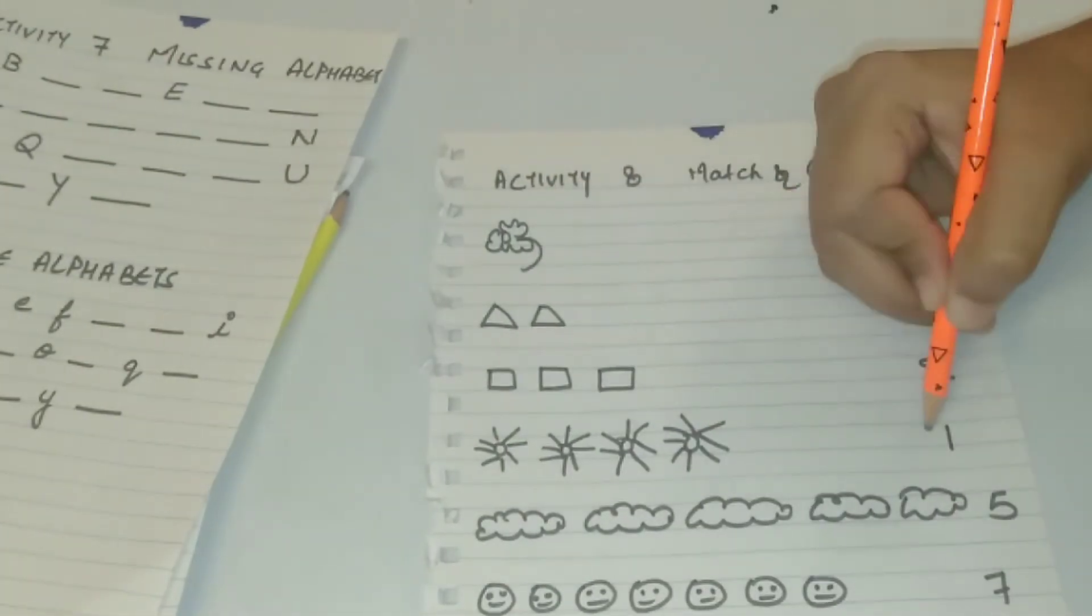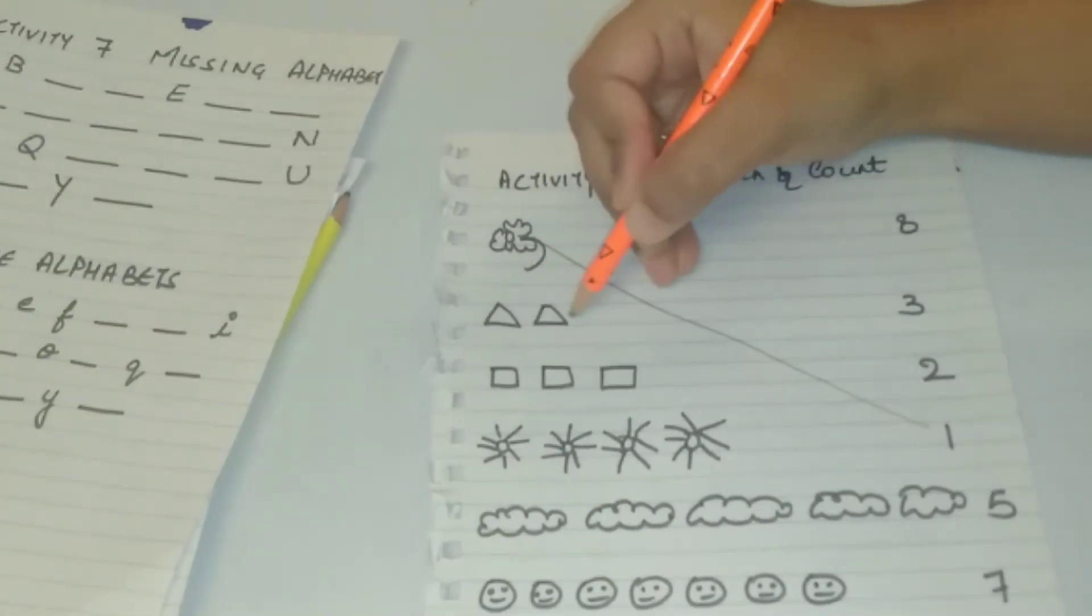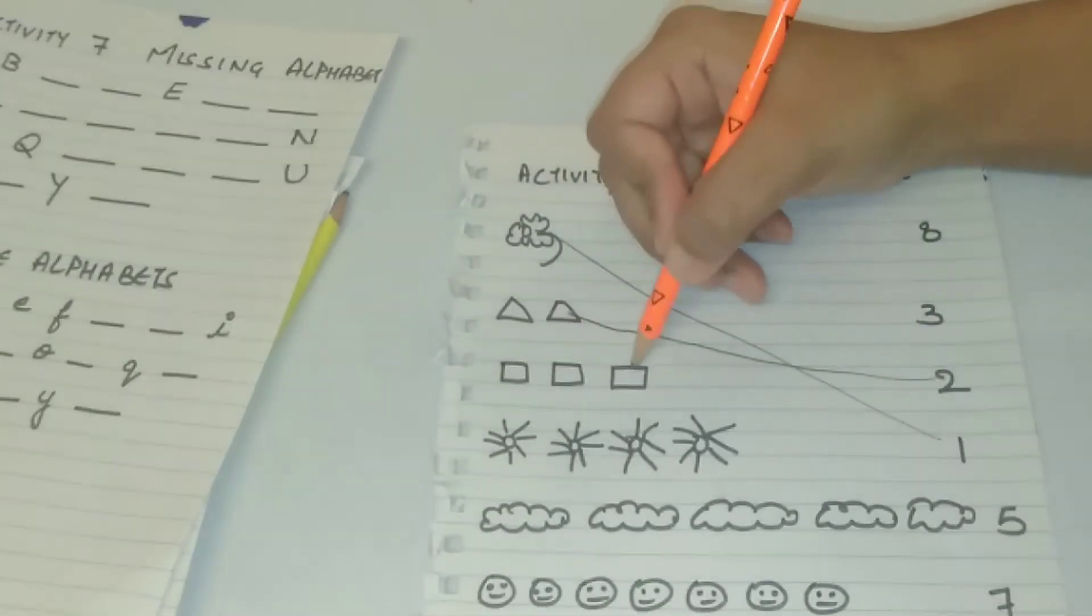Another is match and count. Just draw some figures and ask your kid to count and match with the correct number.